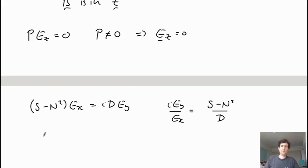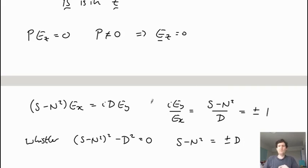Now for a whistler wave, the dispersion relation was that we have S minus N squared all squared minus D squared equals zero. And so S minus N squared is plus or minus D. And so this is either plus or minus one for a whistler wave.